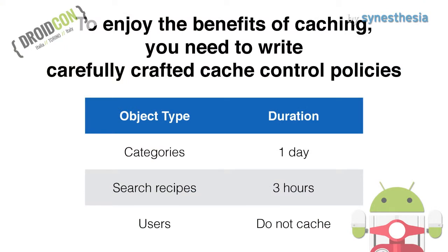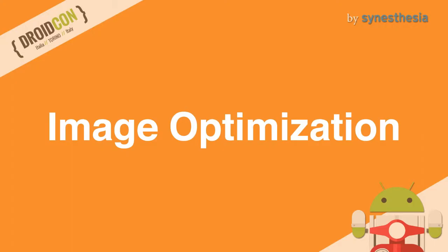To enjoy the benefit of caching, you need to write carefully crafted cache control policies. Server-side cache can be purged at any time, but client-side cache can't be purged from the server side. So you should not enable cache for models that require real-time updating.